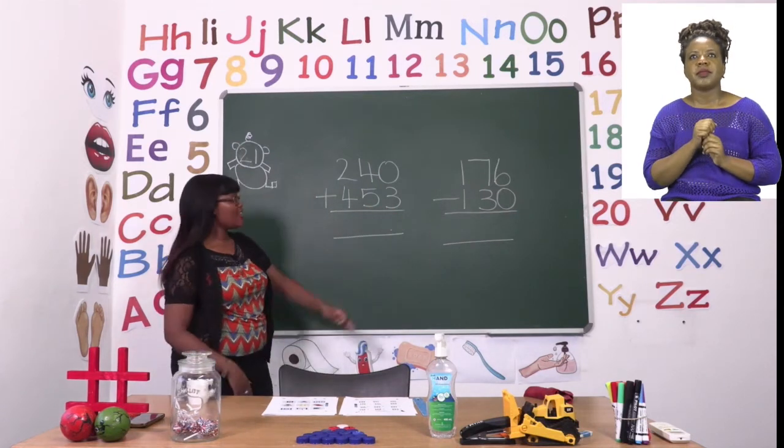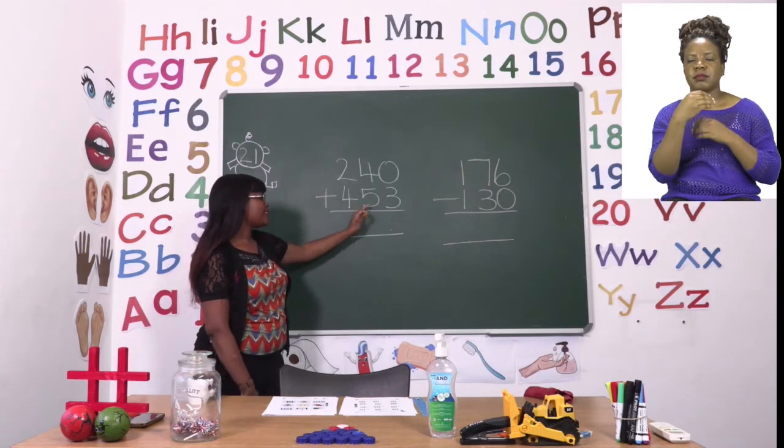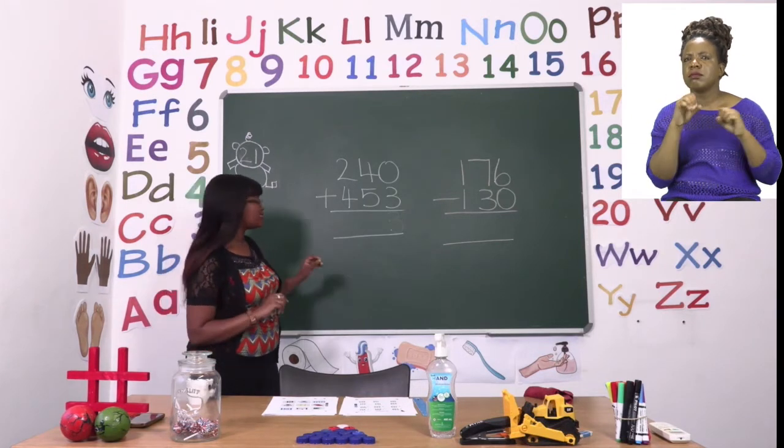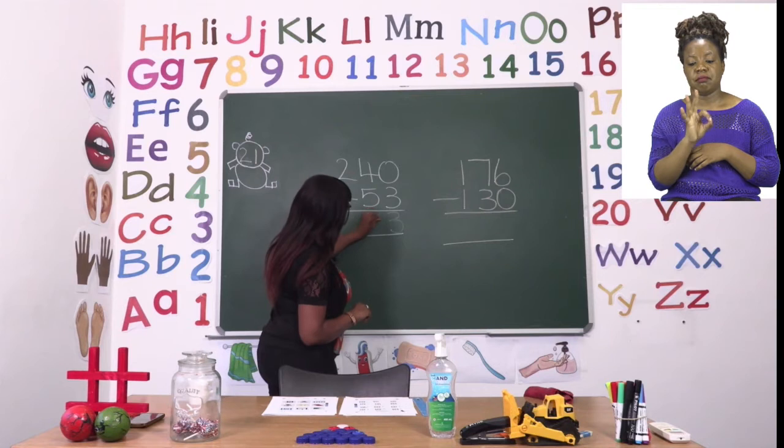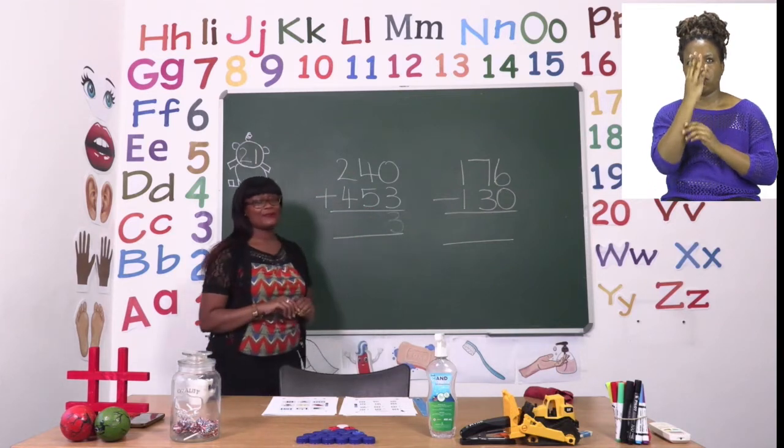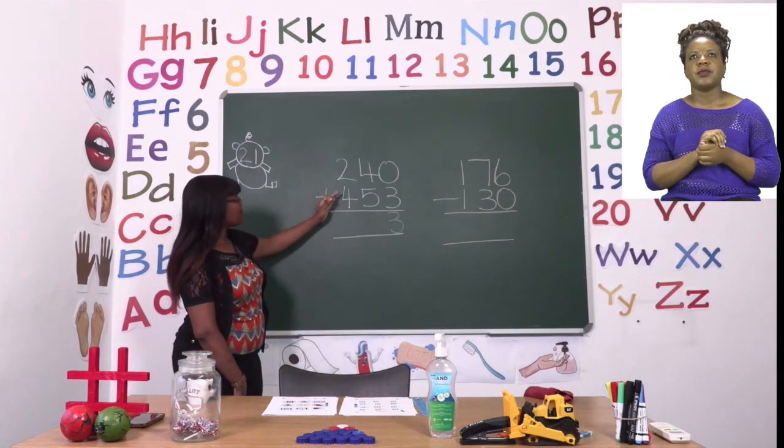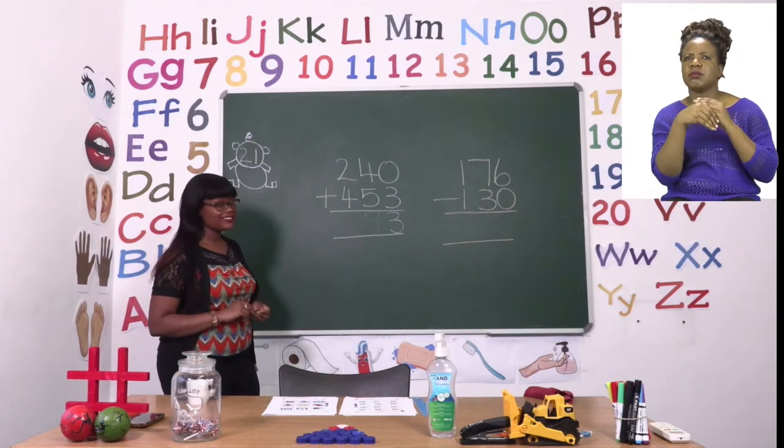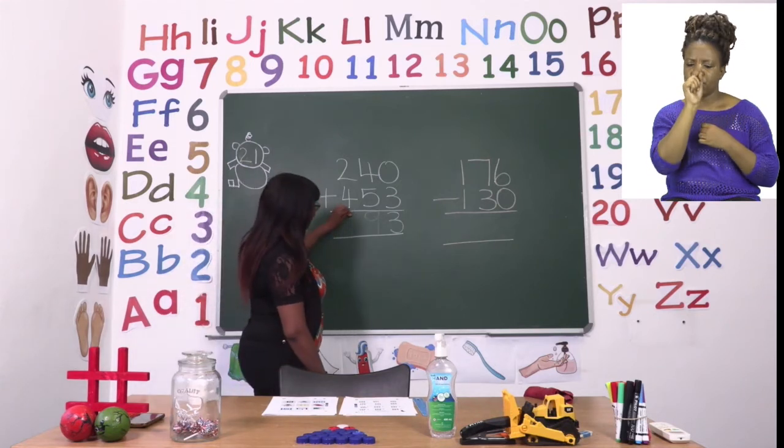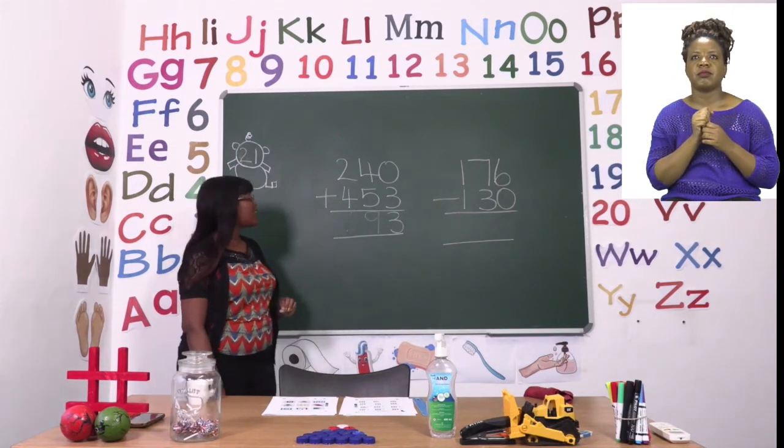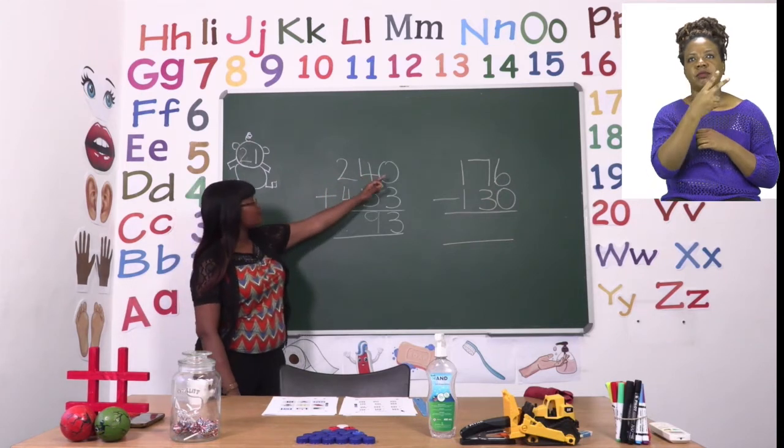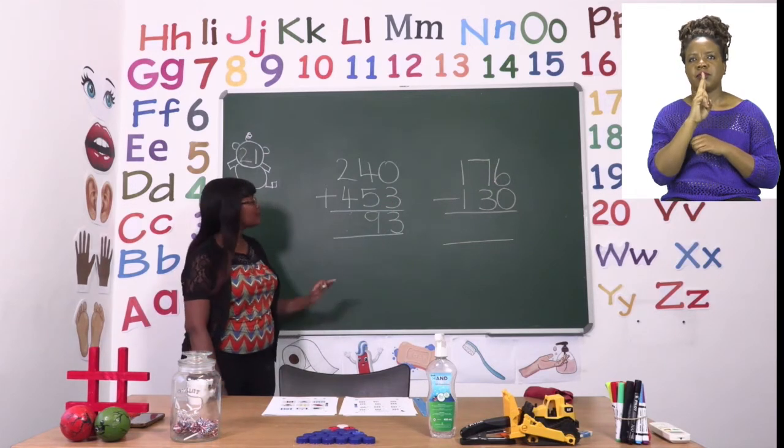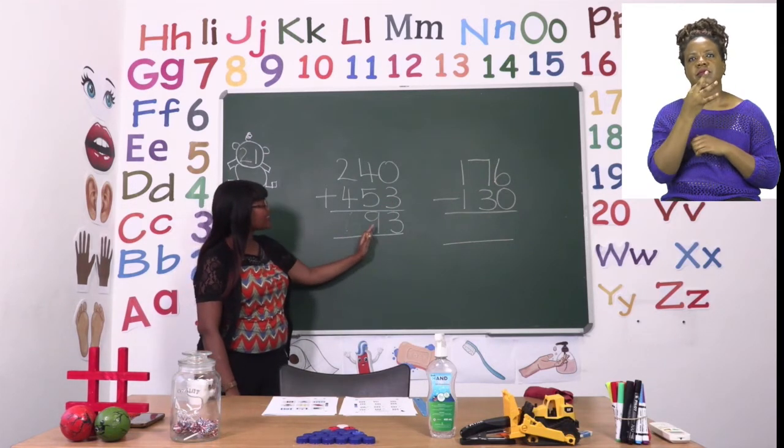Now we say 4 plus 5. And 4 plus 5 my dear friends if you're using your fingers or your counters will add up to 9. Good job. Lastly we say 2 plus 4. So if we have 2 and then we add 4 our answer will be 6. Now we know that 240 plus 453 will equal 693.